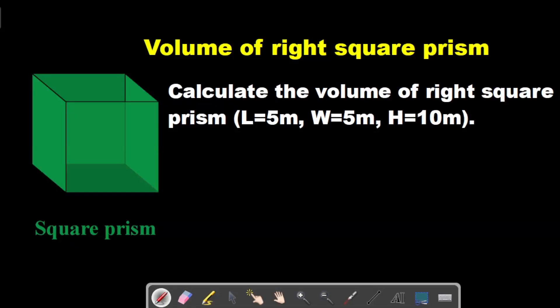In this video we are going to see how to find the volume for right square prism. The formula to find the volume of right square prism is V equals length times width times height.